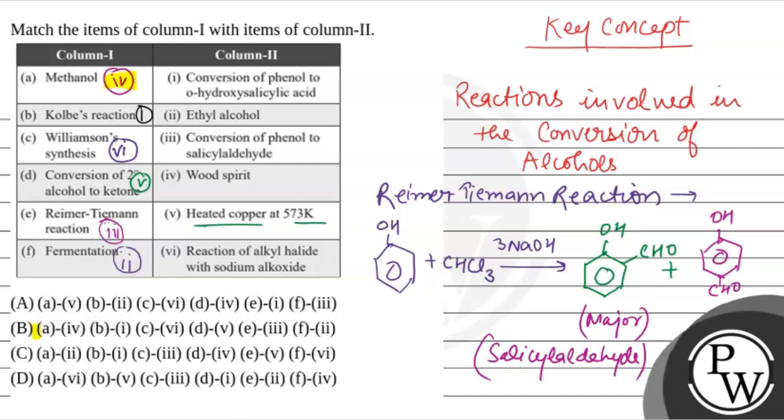So A is 4, B is 1, C is 6, D is 5, 3 and then 2. So it means B is correct. So the final answer is B. Hope you understand it well. Best of luck.